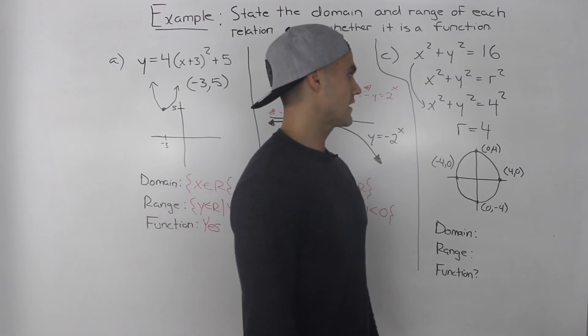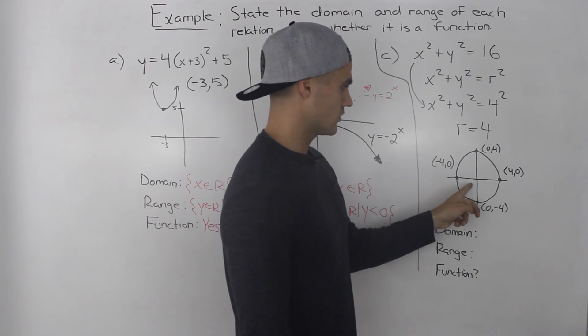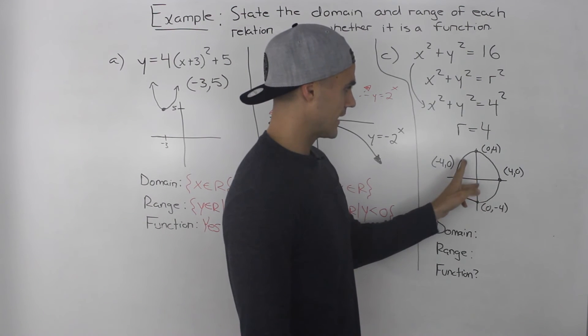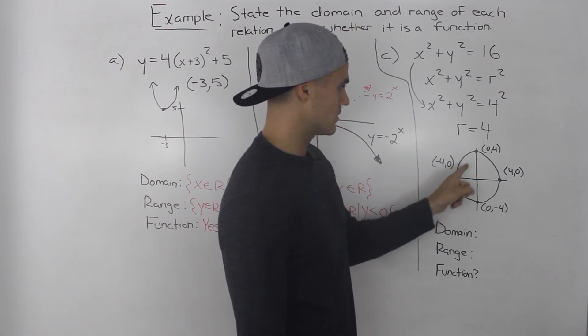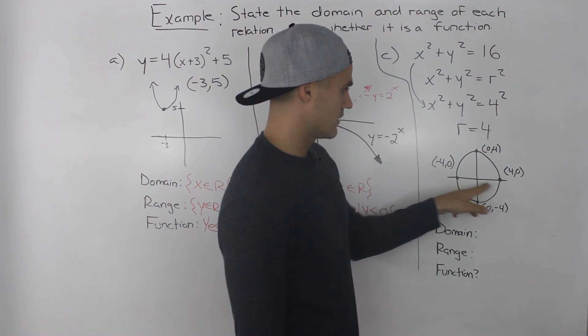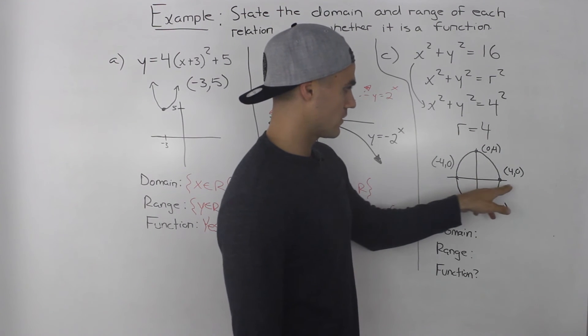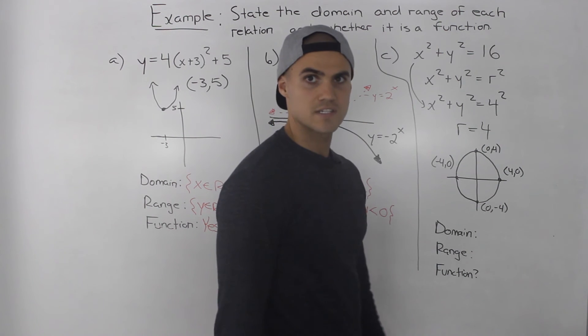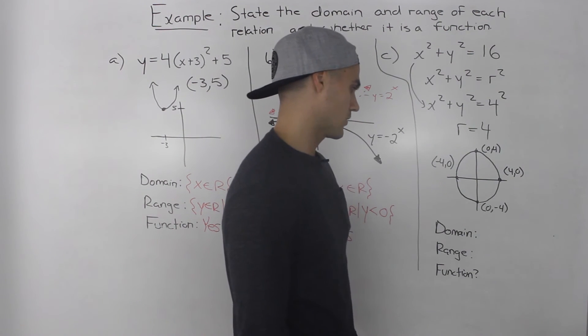So if we take that equation and graph it, we have a circle that has a center at the origin and it has a radius of 4. So it's going to have x-intercepts of negative 4 and 4 and then y-intercepts of negative 4 and 4. And now from this graph, it's easy to find what the domain and range would be.